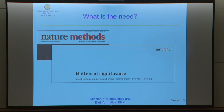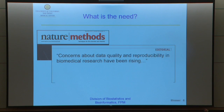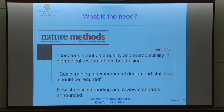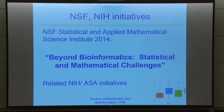Here's my diplomatic way of putting it: as the field matures, better methodology may be called for. This is increasingly becoming an issue in the biomedical literature. Here's a recent editorial from Nature Methods from September that says sound experimental design and analysis require improved statistical training. Concerns about data quality and reproducibility have been rising. Basic training in experimental design and statistics needs to be more broadly disseminated. New statistical reporting and review standards have been announced across the Nature journals, and I think this may have a big impact on the way data analyses are presented going forward. There are related initiatives at NSF and NIH. There's a new SAMSI Institute at NSF called Beyond Bioinformatics — Statistical and Mathematical Challenges — trying to increase the quality of analysis.